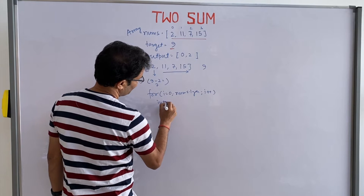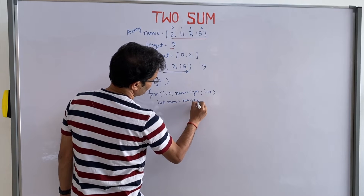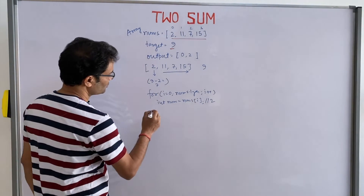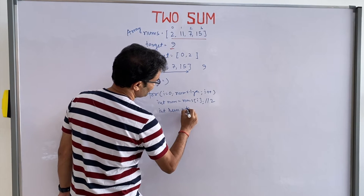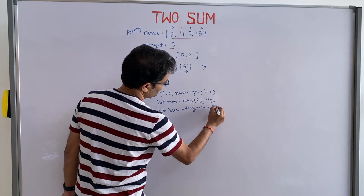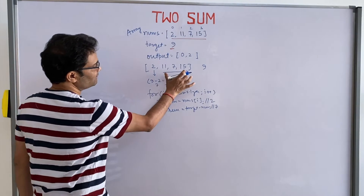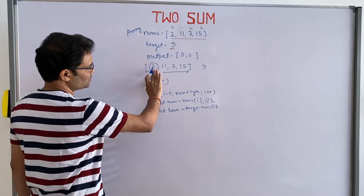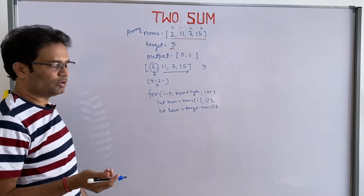You got the number nums[i] — so you got 2. You also find out what the remaining number is: remaining = target - nums[i], which gives 7. You are looking for 7 in the remaining array. Because you are currently standing at index i, you search from i+1 onward. The moment you find 7, your job is done.